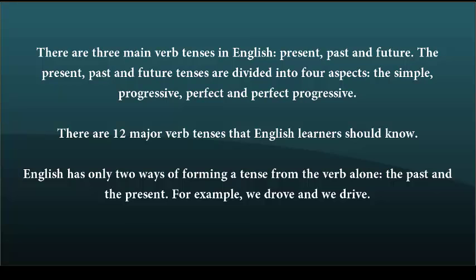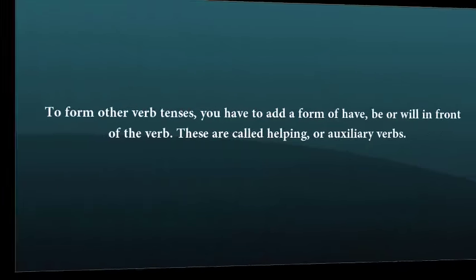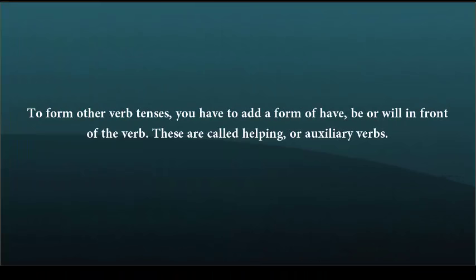There are twelve major verb tenses that English learners should know. English has only two ways of forming a tense from the verb alone: the past and the present. For example, we drove and we drive. To form other verb tenses, you have to add a form of have, be, or will in front of the verb. These are called helping or auxiliary verbs.